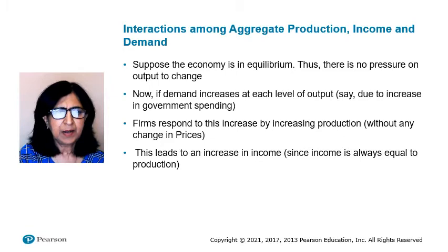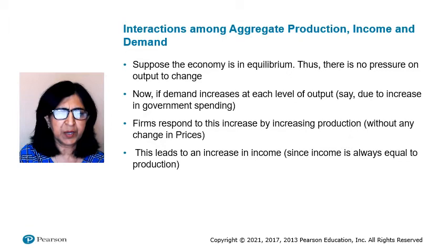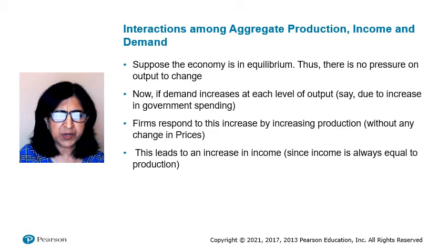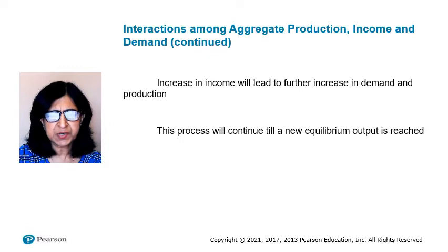Let us begin by understanding the interactions among aggregate production, income and demand. Suppose the economy is in equilibrium — there is no pressure on output to change. Now, if demand increases at each level of output, say due to an increase in government spending, firms respond by increasing production without any change in prices. This leads to an increase in income, since income is always equal to production. The increase in income will lead to further increases in demand and production. This process will continue until a new equilibrium output is reached.